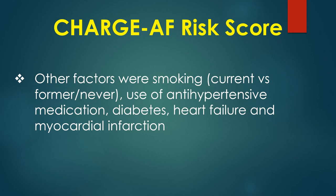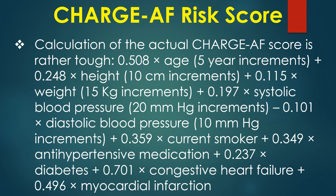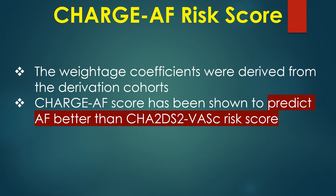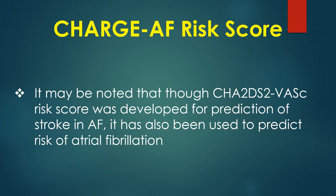Other factors included smoking, use of antihypertensive medication, diabetes, heart failure, and myocardial infarction. Calculation of the actual CHARGE-AF score is rather complex. CHARGE-AF score has been shown to predict AF better than CHA2DS2-VASc score. It may be noted that though CHA2DS2-VASc score was developed for prediction of stroke in atrial fibrillation, it has also been used to predict risk of atrial fibrillation.